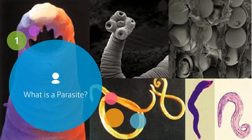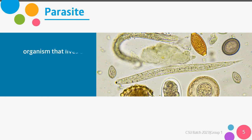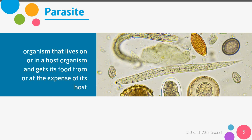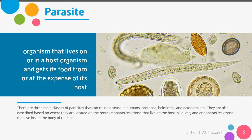So what is a parasite? A parasite is an organism that lives on or in a host organism and gets its food from or at the expense of its host. A parasite can be classified into three main classes, namely protozoa, helminths, and ectoparasites. Besides this classification, a parasite can also be described based on where they are located on the host. A parasite that lives on the skin would be called an ectoparasite, while endoparasites are those that live inside the body of the host.